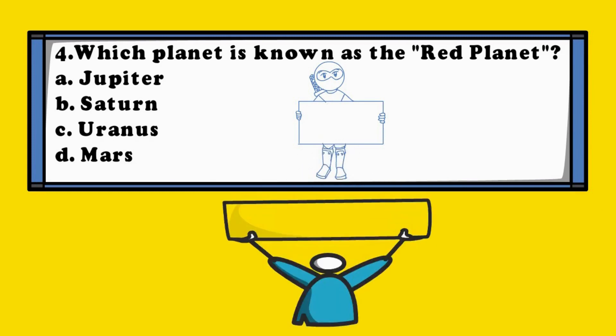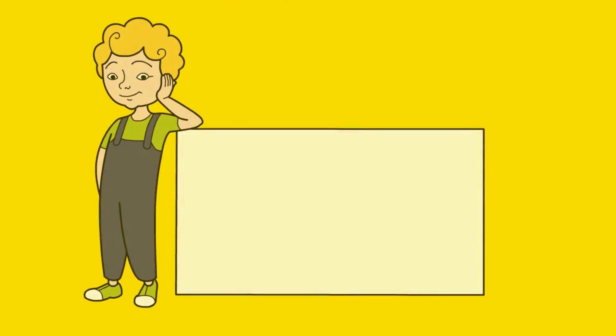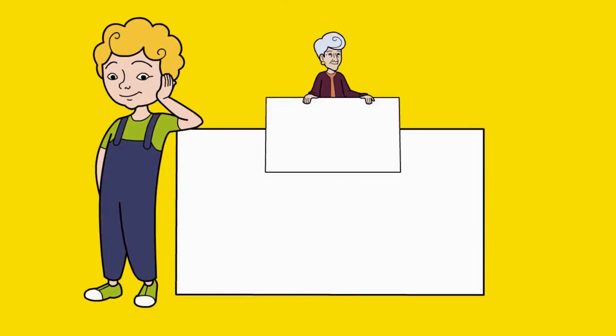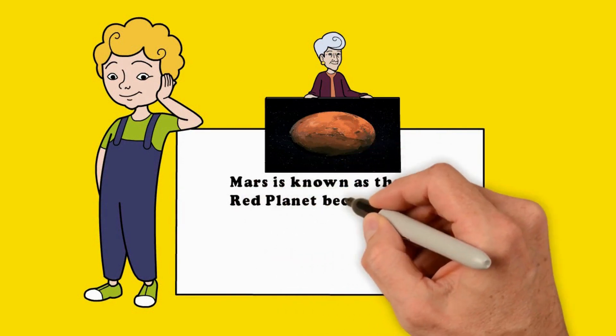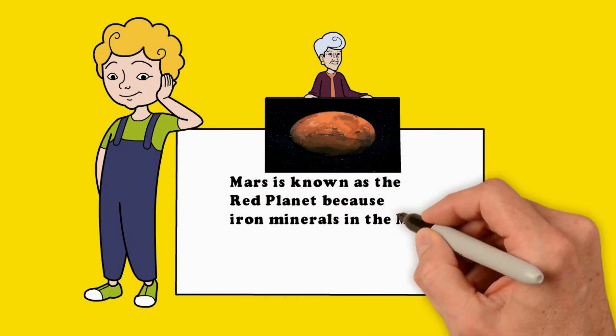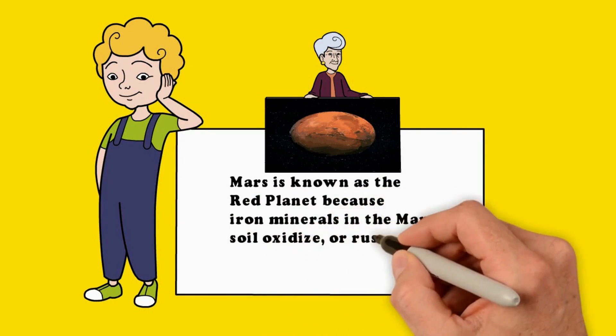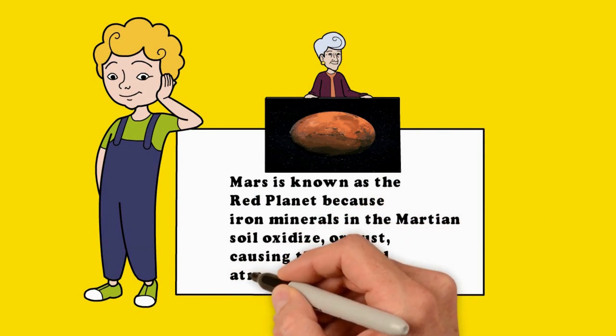The answer is D. Mars. Mars is known as the Red Planet because iron minerals in the Martian soil oxidize, or rust, causing the soil and atmosphere to look red.